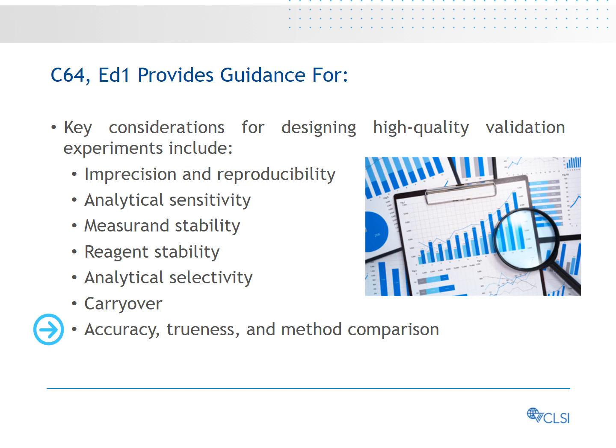Accuracy, trueness, and method comparison: evaluation of trueness, i.e., the magnitude of agreement with a reference system, is the preferred method of accuracy assessment. To evaluate accuracy, the developer should perform method comparison experiments with multiple runs over a minimum of five days. Method comparison studies should use individual native matrix samples that represent the spectrum of physiological states, both normal and pathological, expected in the intended test population.